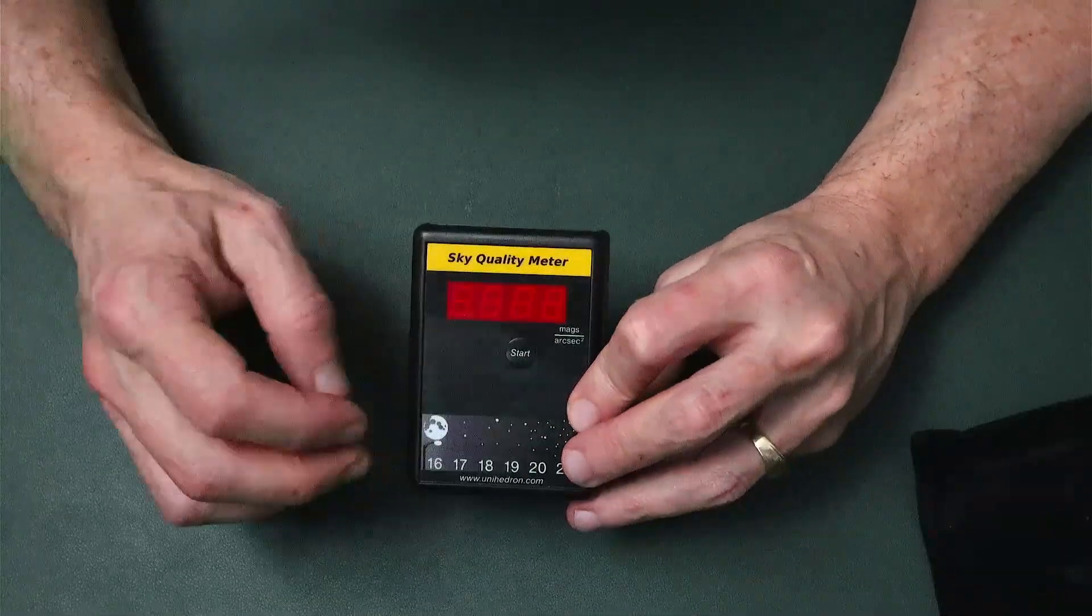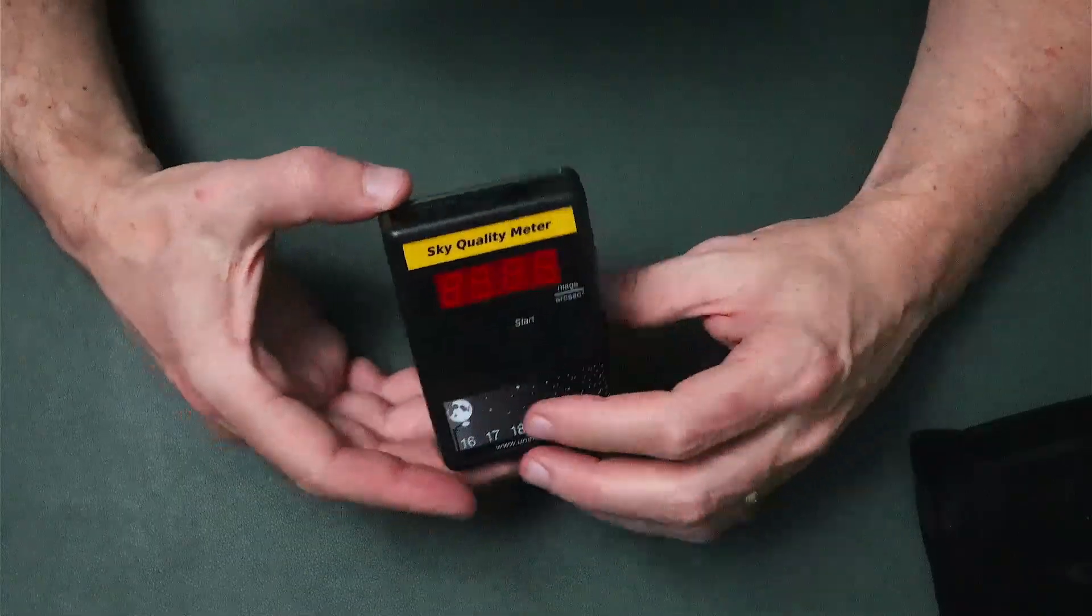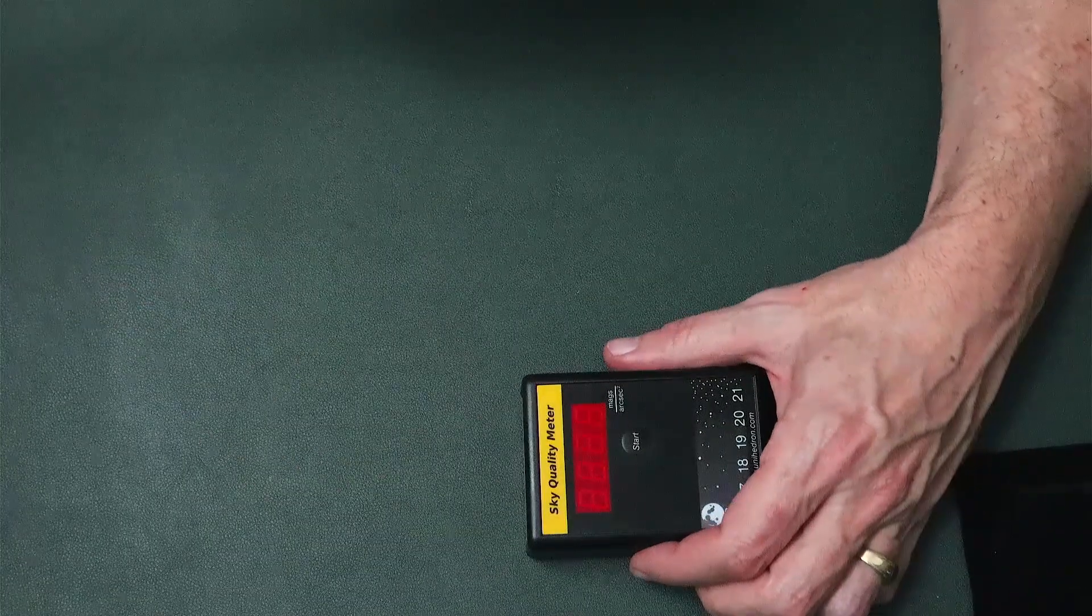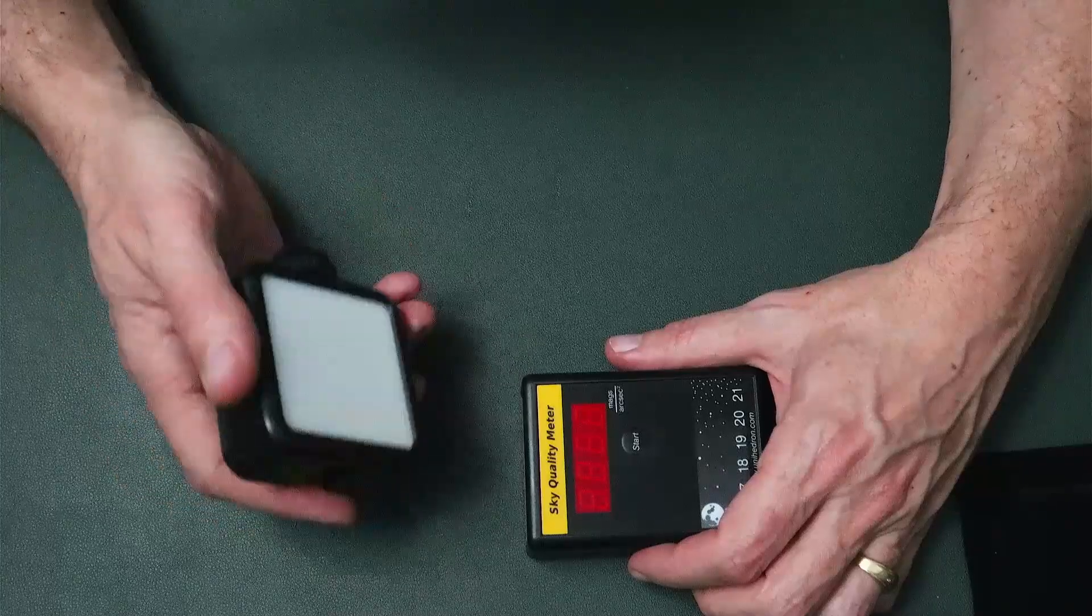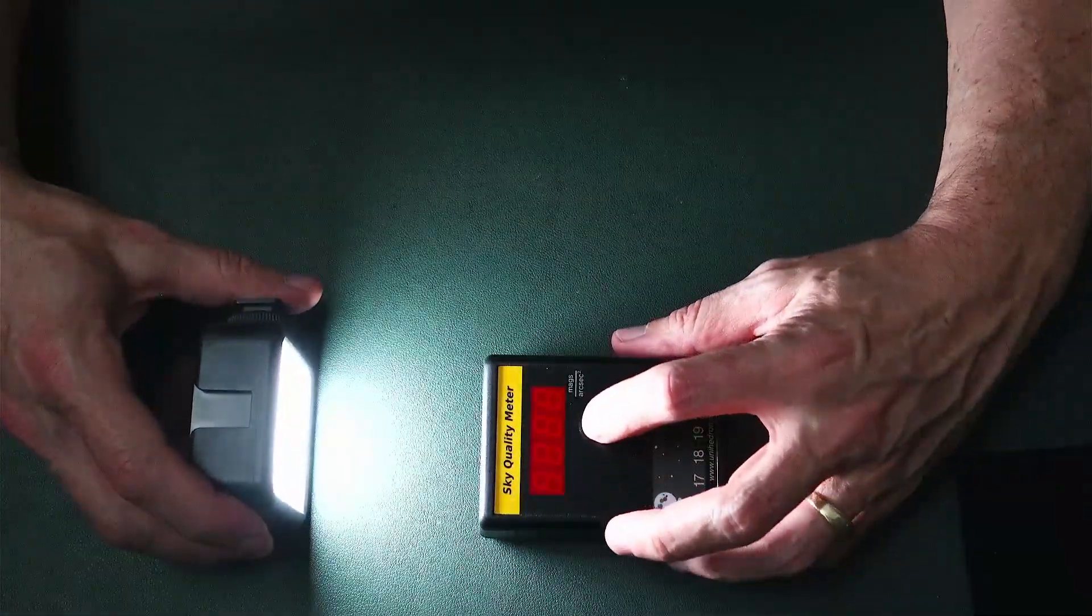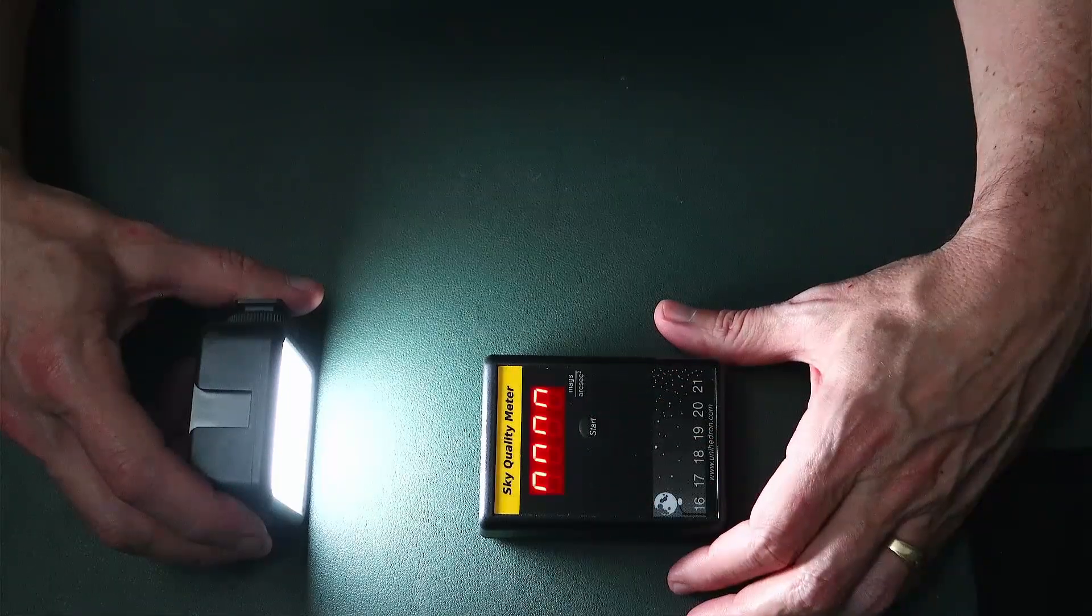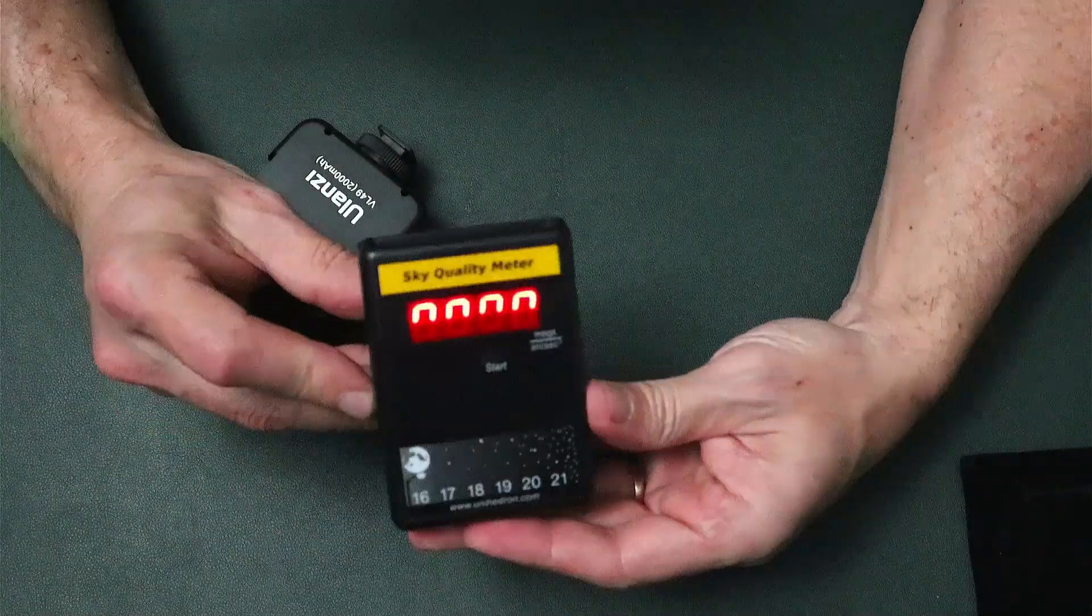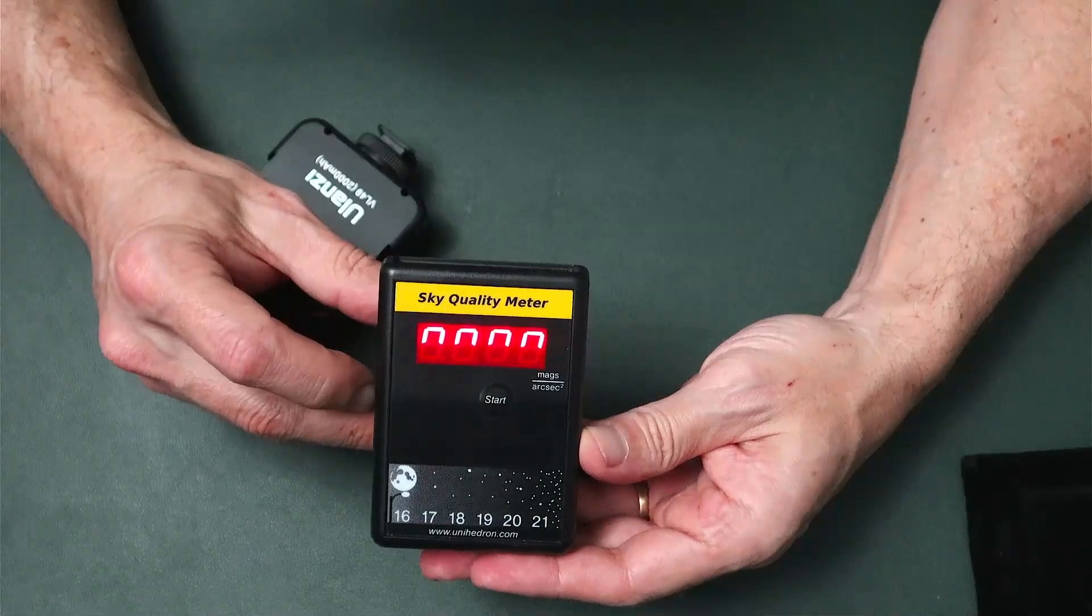And there are two other measurements that will come up under two specific situations. And the first one is a really extremely bright light source. So I'll just turn on my LED light here just so I can show you that one. We'll take a reading and you can see we got what looks like lowercase n's. That's just telling you it's way too bright for it to take a reading.